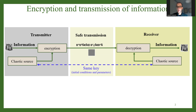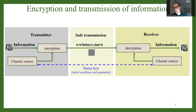We safely transmit it through a public channel, and then at the receiver end we use the exact same chaotic system with the exact same settings in order to reverse the process, decrypt the signal, and obtain the original information back. The term symmetric encryption comes from the fact that the transmitter and receiver both use the same system with the exact same settings.